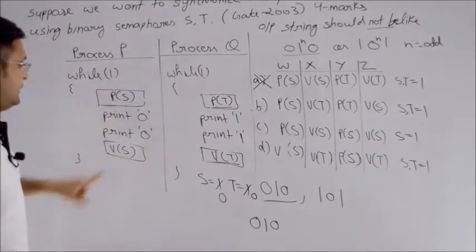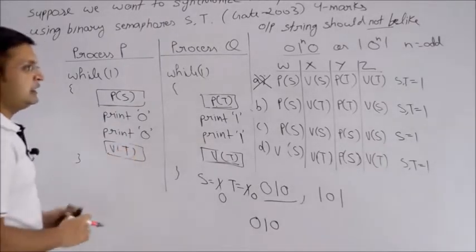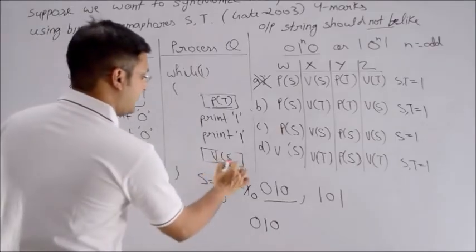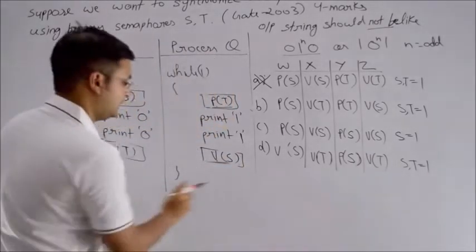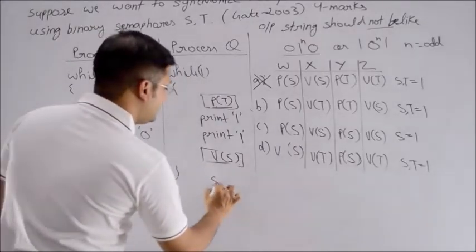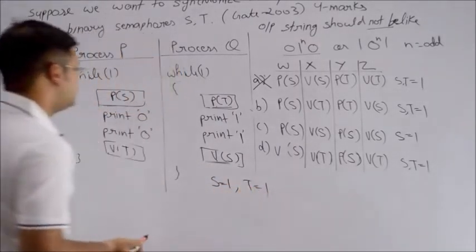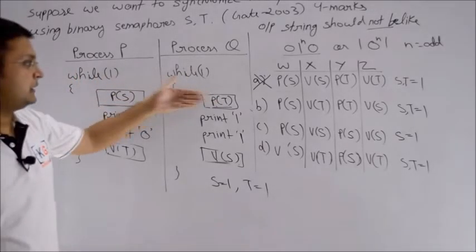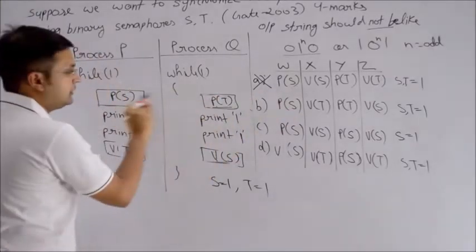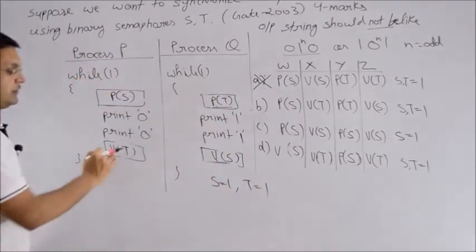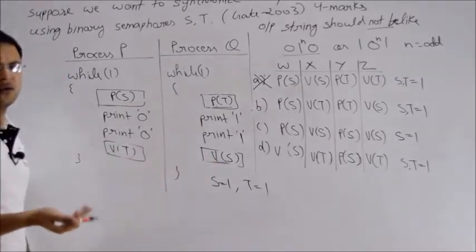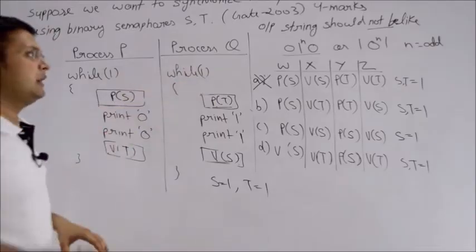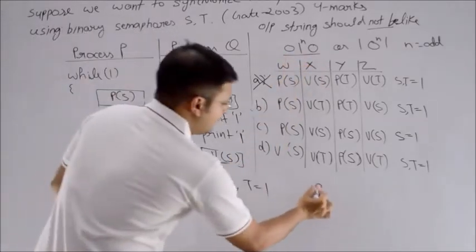Now let me try the second case - P of S, and this time it says V of T. Second, it says P of T, and then V of S. Again, this time also initializing with S equals 1 and T equals 1. Now starting, both values are 1. Again, the question is can I generate this pattern or not?